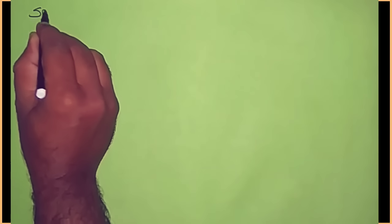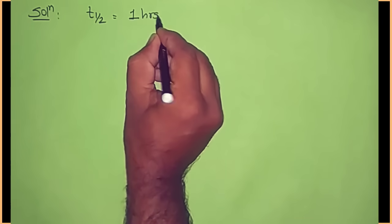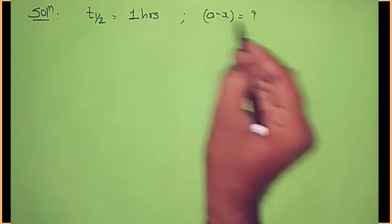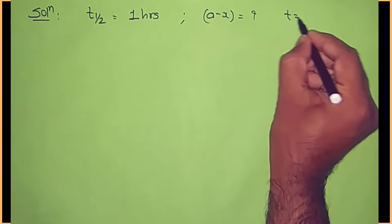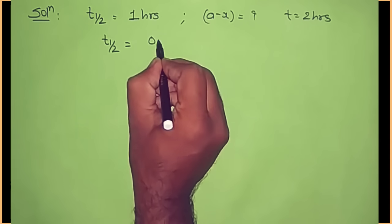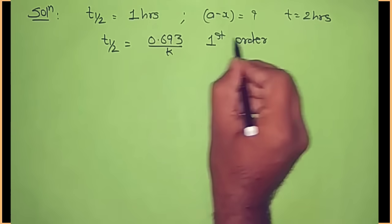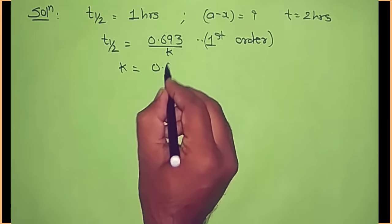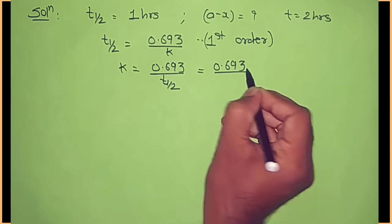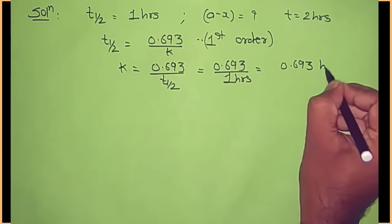In the solution, t half is given as 1 hour. Using the first order relation t half equals 0.693 upon k, we can calculate the rate constant: k equals 0.693 upon t half equals 0.693 upon 1 hour, so k is equal to 0.693 hour inverse.